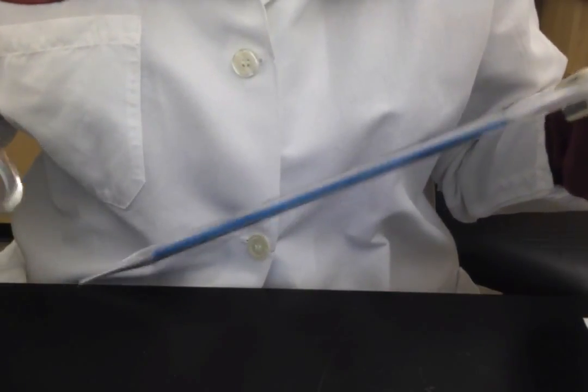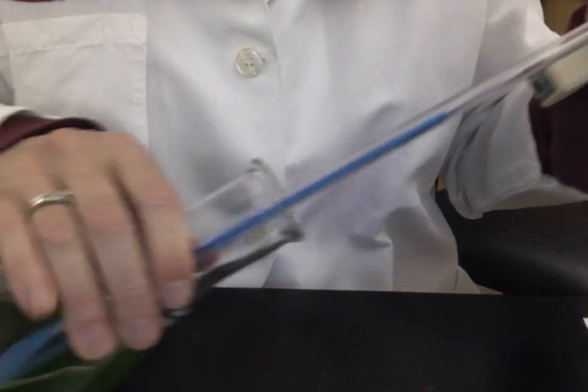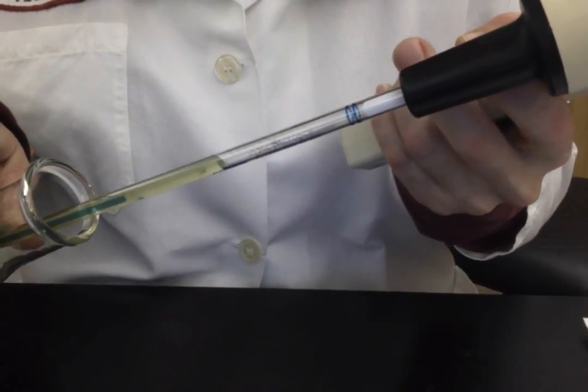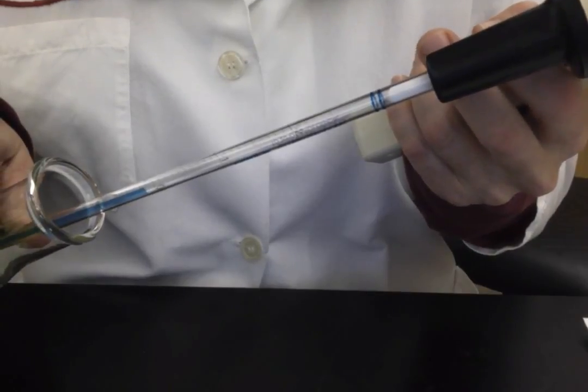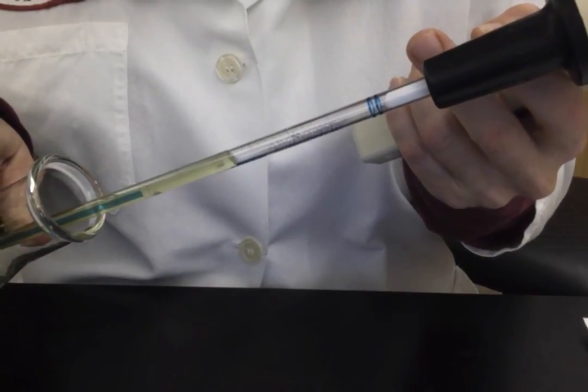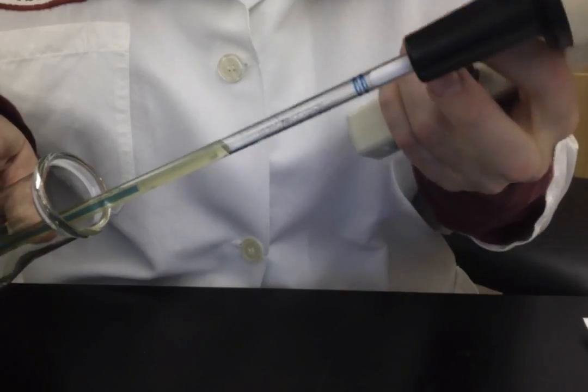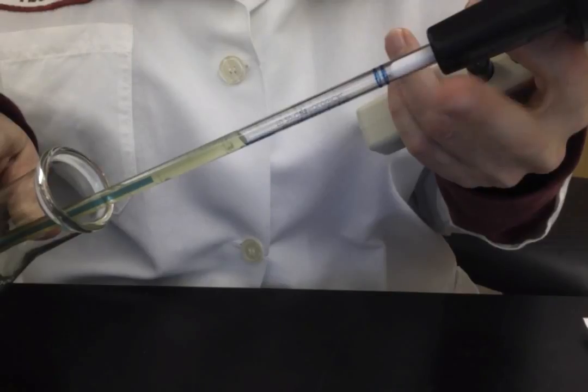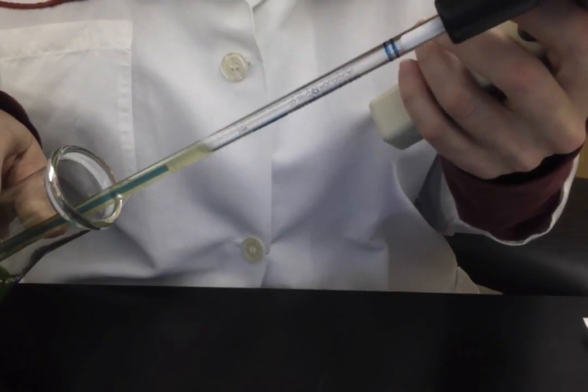To get fluid, you pull up, and to expel it, you push down. You never want to go too close to those two blue lines at the top of the pipette in order to protect the fluid from getting into this cotton and then into the filter.